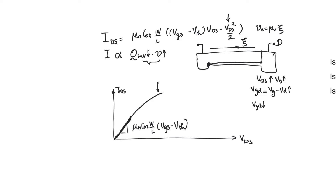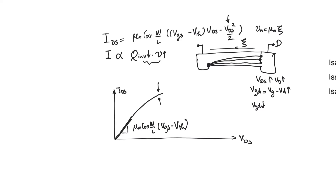If we increase drain potential even further, we decrease the charge at the drain even further. So there are two competing factors: more drain potential means charges are moving faster, but there are fewer charges moving faster. Up to the point drawn on the graph, velocity is winning because we see a net increase in current.